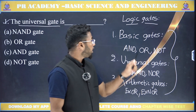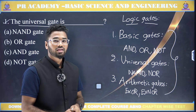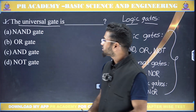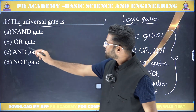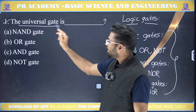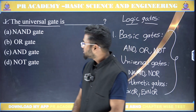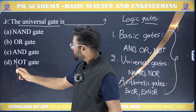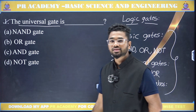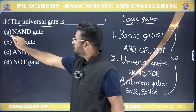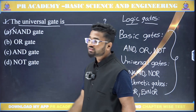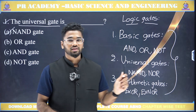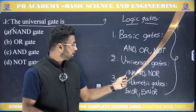So now let us see what is the question asked. The question is: what is the universal gate? Looking at the options — NAND gate, OR gate, AND gate, and NOT gate — the answer is NAND gate, because NAND and NOR are the only universal gates. So option A (NAND gate) is the correct answer.